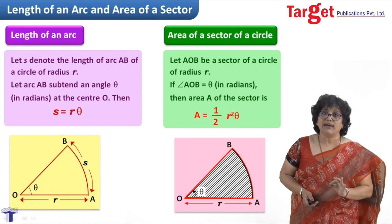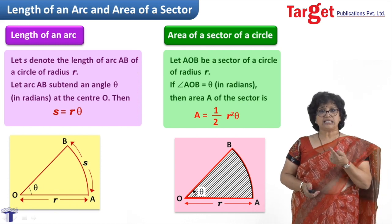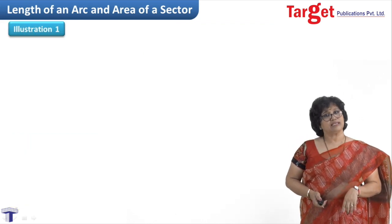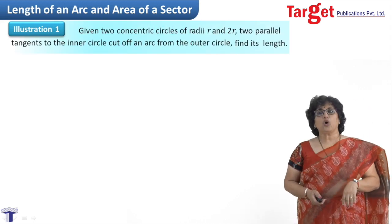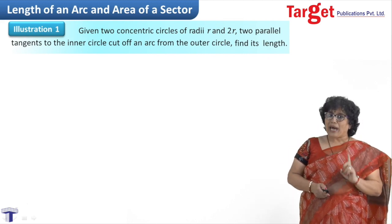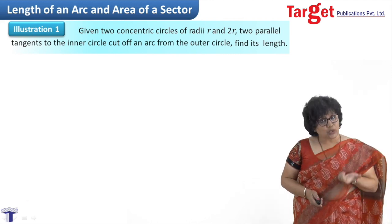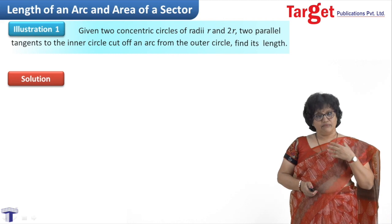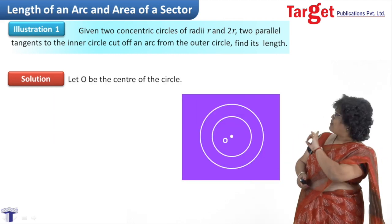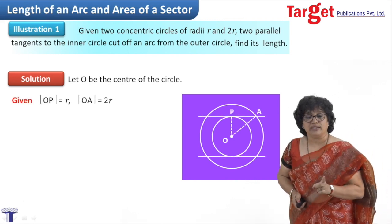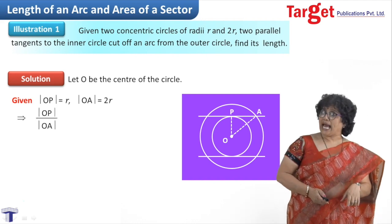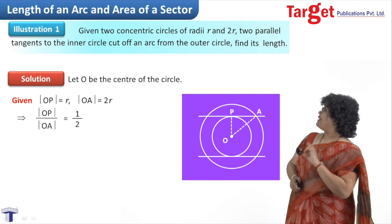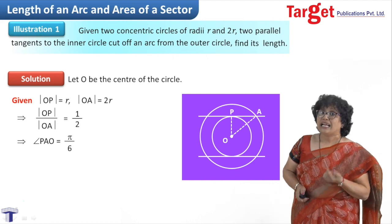With this background, let us take some illustrations. The first illustration: two concentric circles with radii r and 2r are given. Two parallel tangents to the inner circle cut off an arc from the outer circle — find its length. When I read this question, we need to draw the picture. I have drawn two concentric circles with center O, with OP = r and OA = 2r. Triangle OPA is a right triangle, and OP/OA gives us sin of angle PAO.